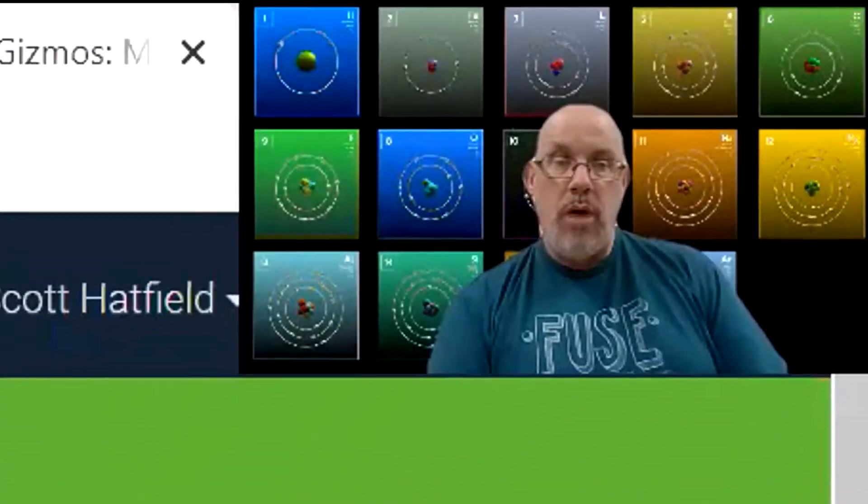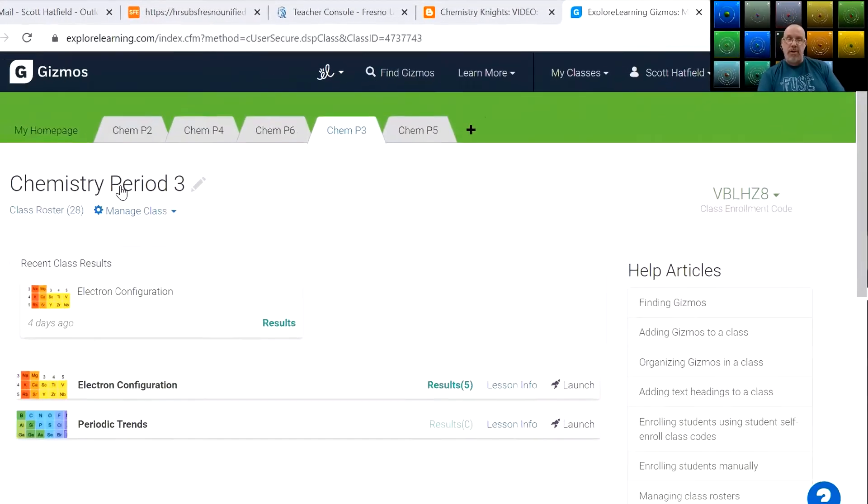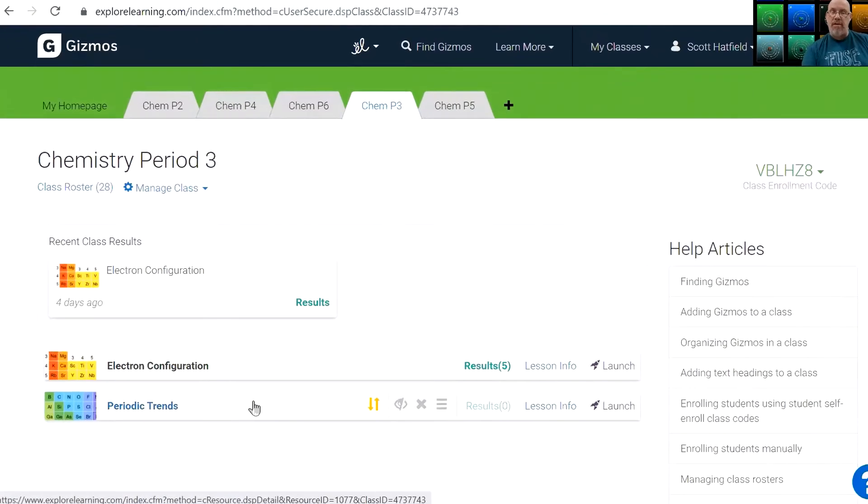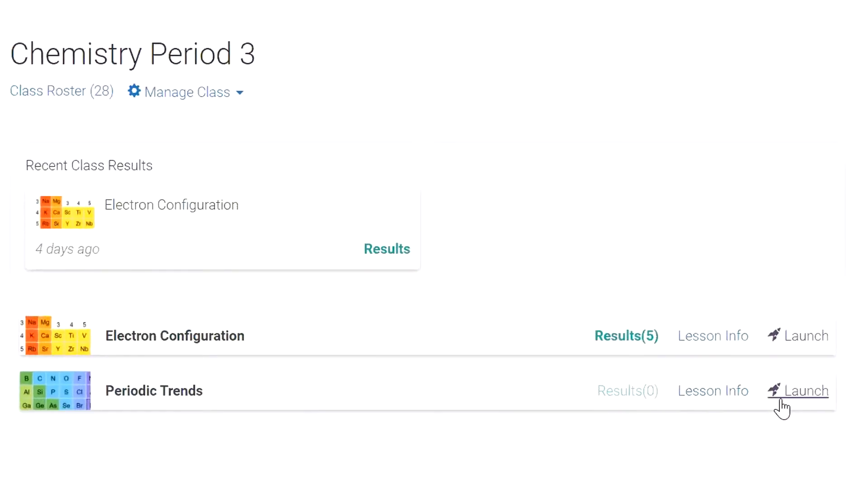Let's see if that's the case. Let's say you come to your class period. In this case, it happens to be chemistry period three. Previously, we worked on electron configuration. You now see here at the bottom, we have a new one that's labeled Periodic Trends. So we're going to click on the icon that looks like a rocket.